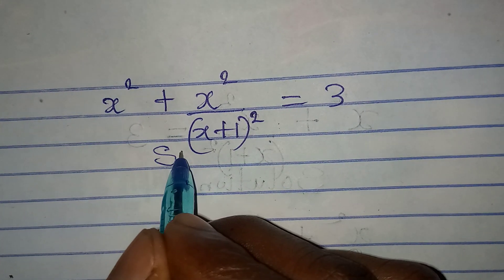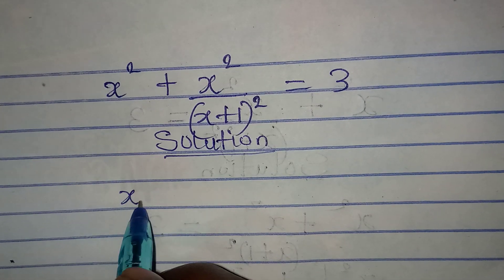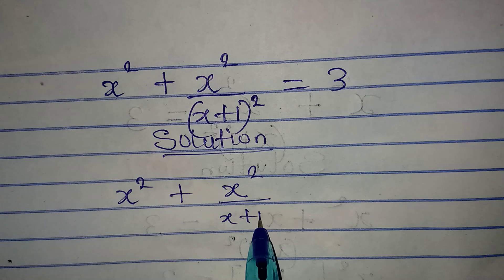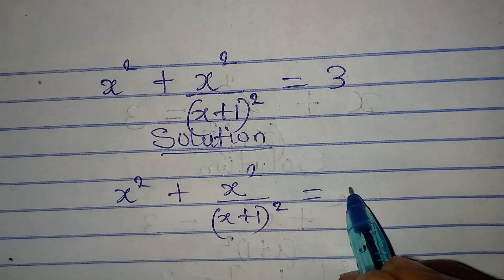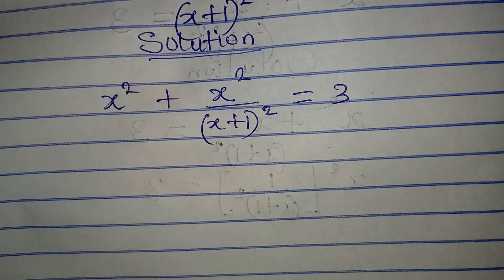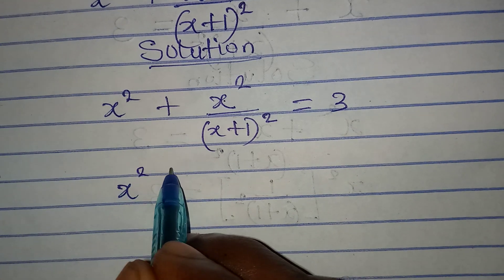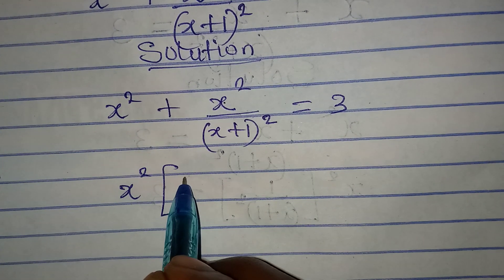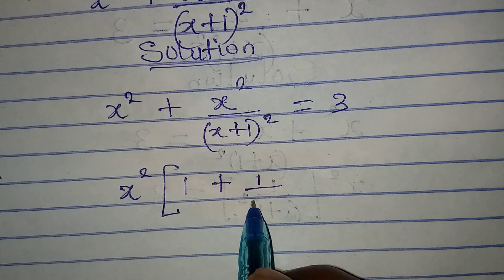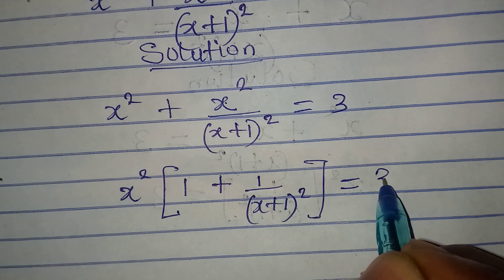Hello everyone, let's solve this olympiad mathematics problem. We have x squared plus x squared over x plus one, both squared, equals three. The first thing I want to do is factor out x squared, because we have it in both terms. So x squared comes out, and in place of this I have one plus one over x plus one squared, and this is equal to three.